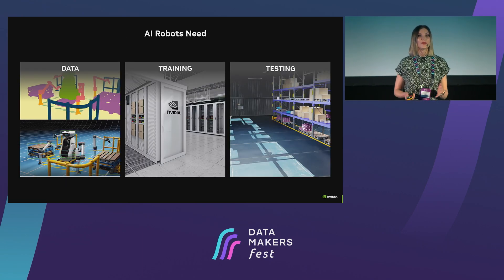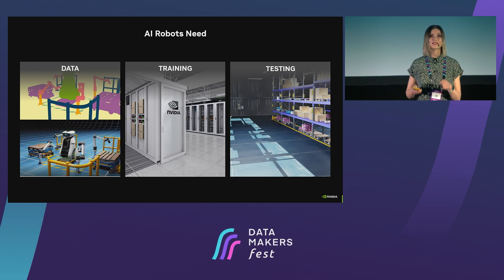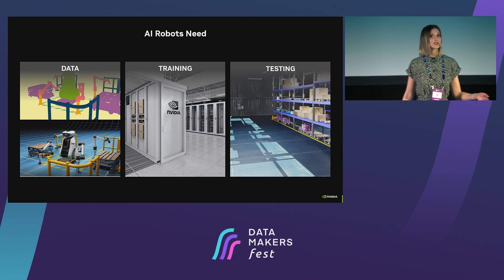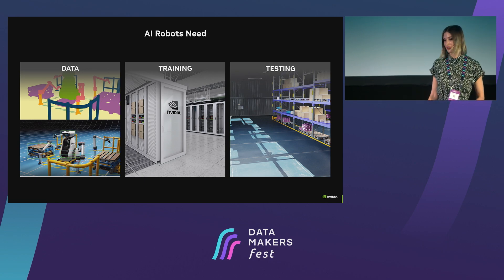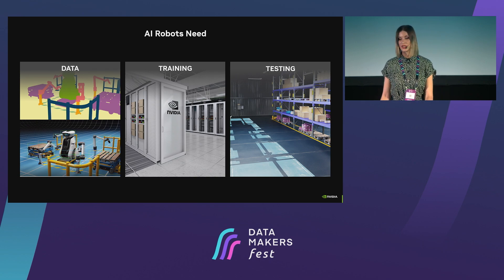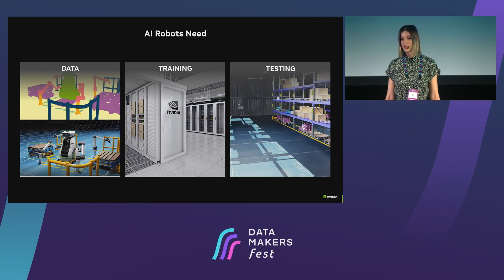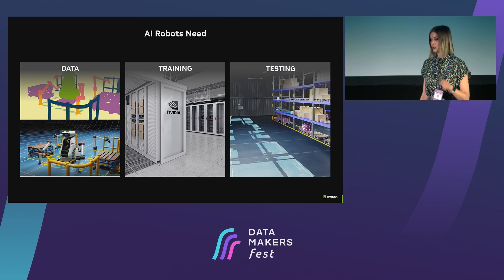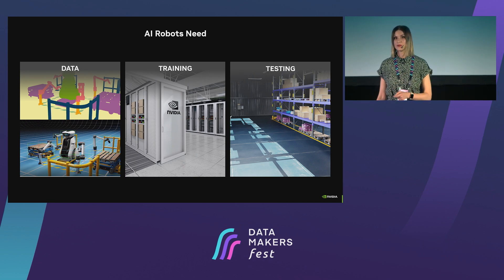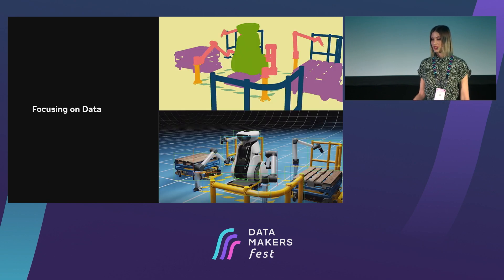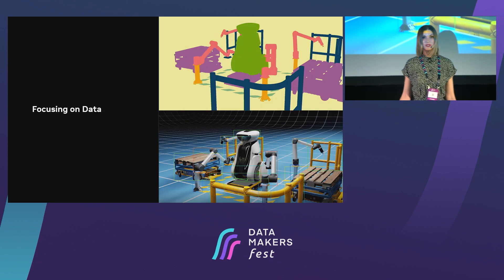AI robots have many needs. The first need is data. Data is the fuel of the digital world, and there is no AI possible without data. Robots also need training — lots of training. By training, we understand hardware infrastructure, the algorithms to train your robots, and the neural network architectures. And robots also need testing. You need to make sure that your AI robot is able to generalize on unseen environments. Testing is an essential part of developing an AI robot. In my talk today, I will focus on data.